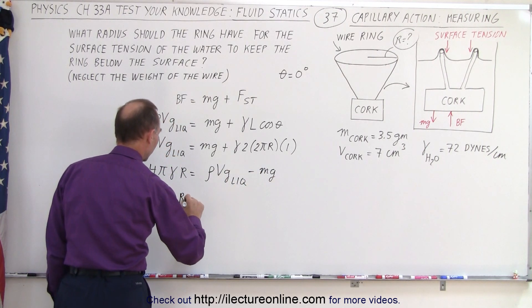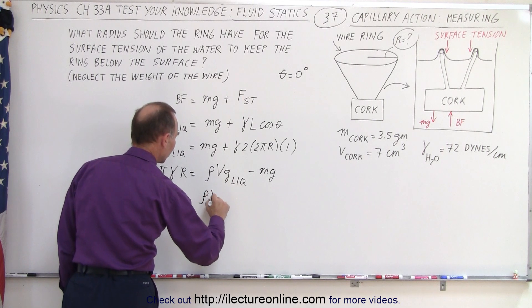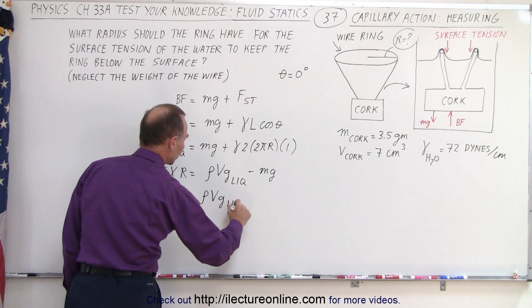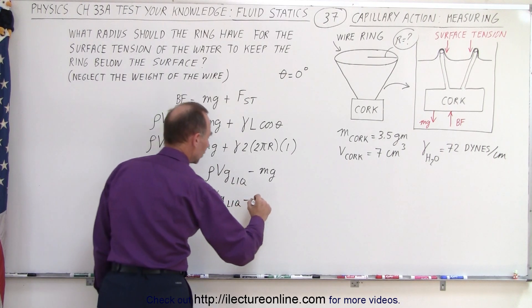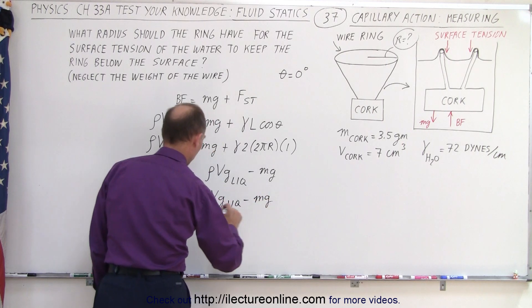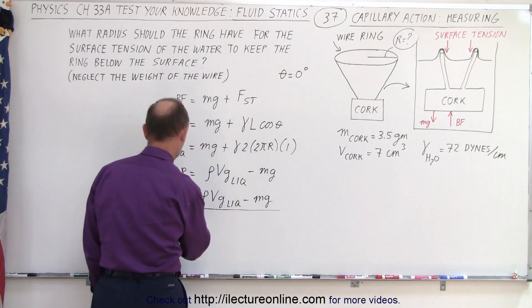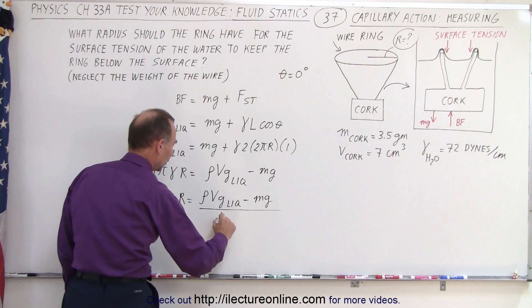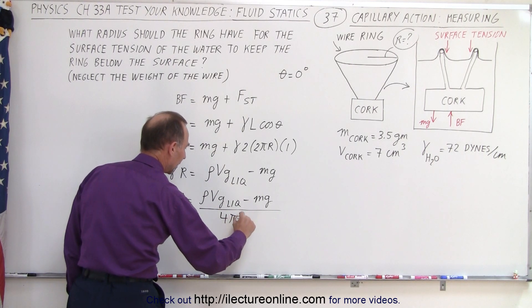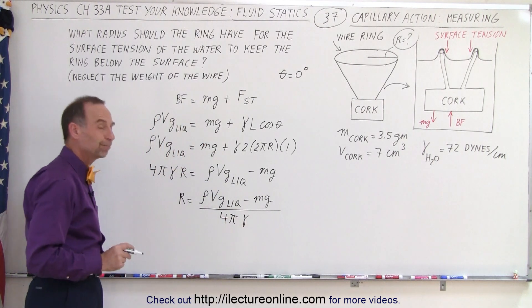And then finally we can see that r is going to be equal to the density volume g times the liquid minus mg, all divided by 4π times the surface tension.